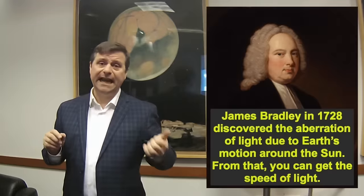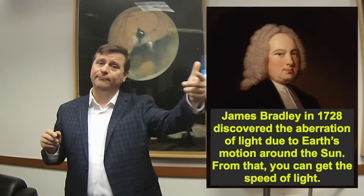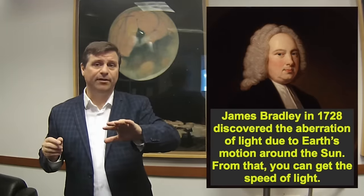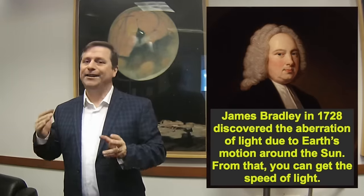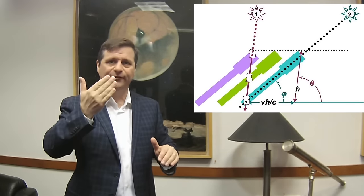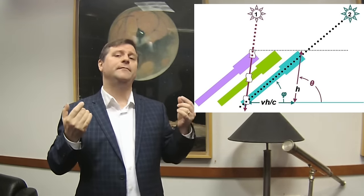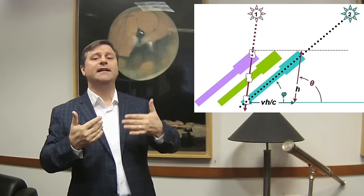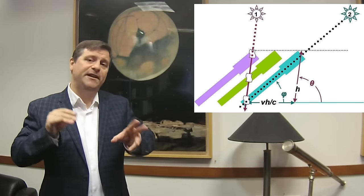In 1728, about 50 years later, James Bradley, while trying to measure stellar parallax, found stellar aberration instead. To account for the telescope's motion and make the apparent position of the light appear correct, he had to change the pitch of the telescope. He determined the speed of light had to be about 300,000 kilometers per second for that to work.